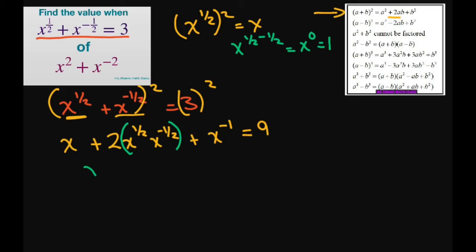Therefore, you have x plus 2 — because that middle term just equals 1 — plus x to the power of negative 1 equals 9. And if you subtract 2 from both sides, you're going to get x plus x to the power of negative 1 equals 7.